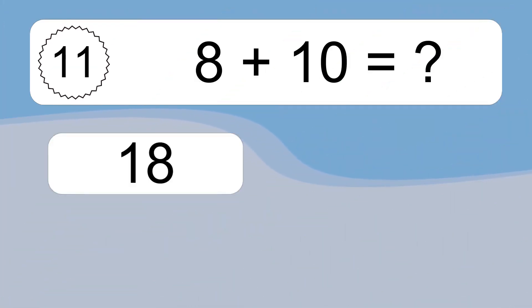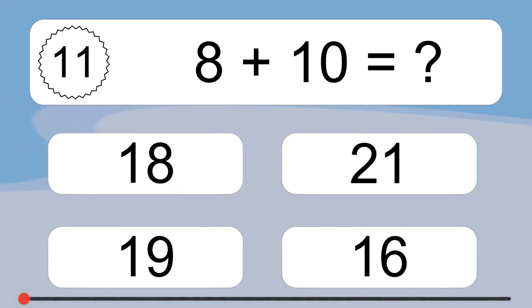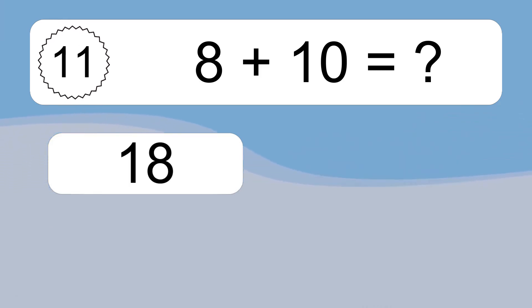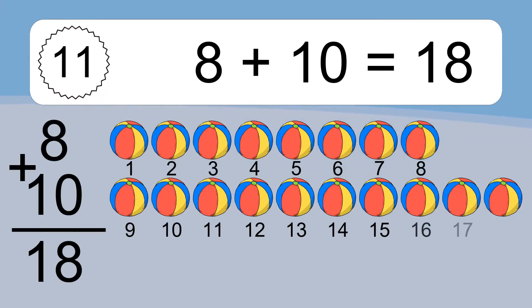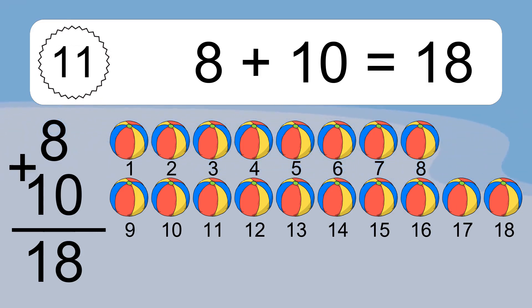8 plus 10 equals what? 10 plus 10 equals 18. Let's count it: 1, 2, 3, 4, 5, 6, 7, 8, 9, 10, 11, 12, 13, 14, 15, 16, 17, 18.